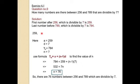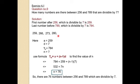So the first number of the progression is 259. The next number is obtained by adding 7: 259 plus 7 is 266, which is also completely divisible by 7. Similarly, 266 plus 7 is 273, also divisible by 7. Then 273 plus 7 is 280, also completely divisible by 7. So the sequence consists of multiples of 7, with first term 259 and each next term obtained by adding 7.